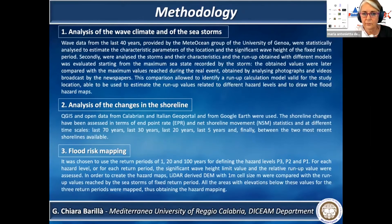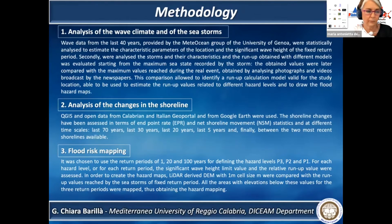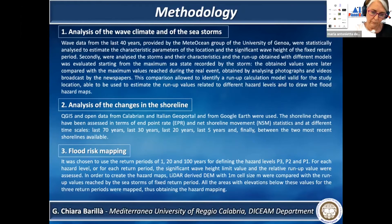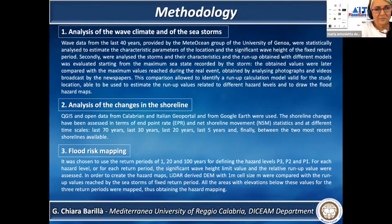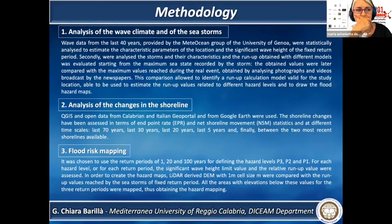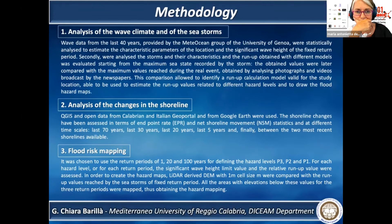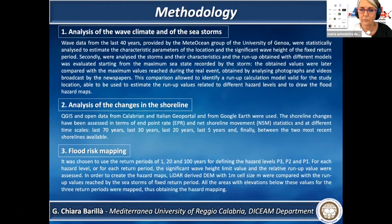For the first phase, wave data from the last 40 years provided by the Meteocean Group of Genoa were used and statistically analyzed to estimate the characteristics and parameters of the location and the significant wave height of fixed return period. Subsequently, the storms and their characteristics were analyzed, and the run-up obtained with different models was evaluated, starting from the maximum sea state recorded by the storms.